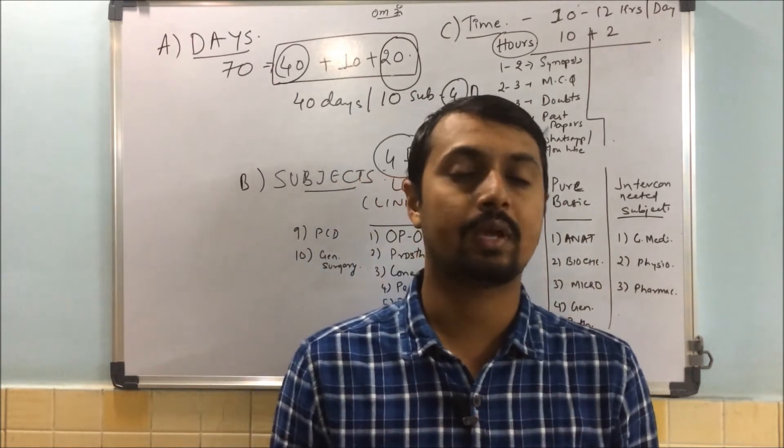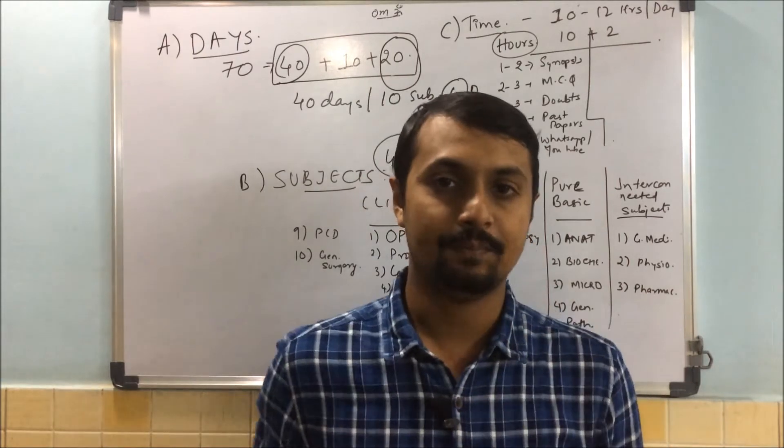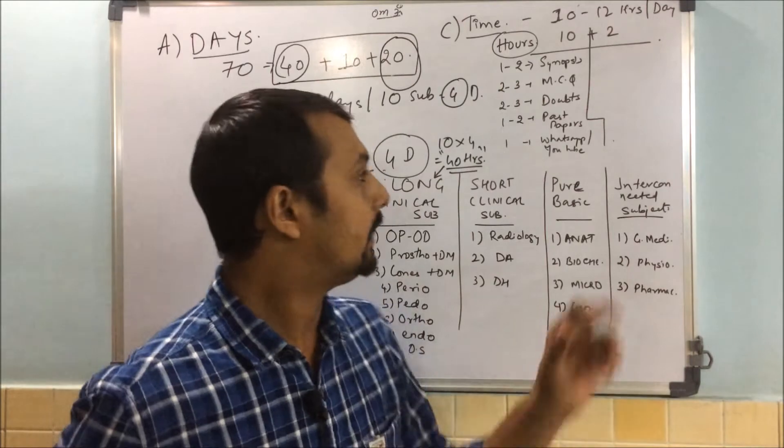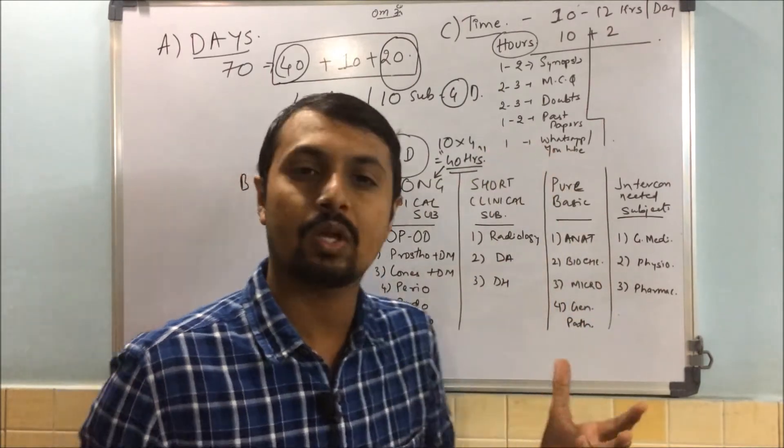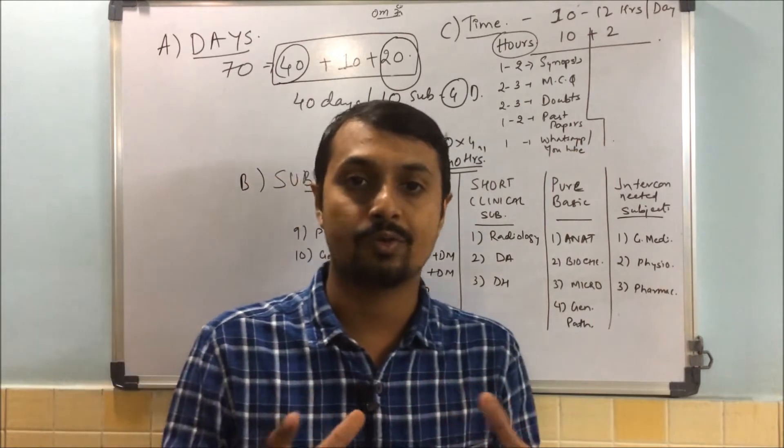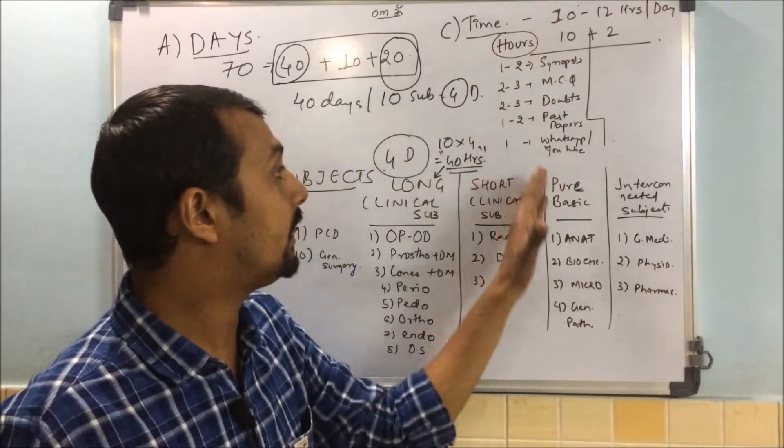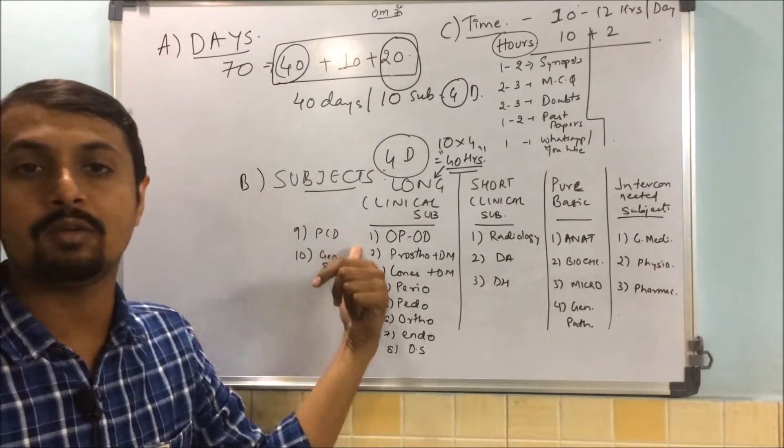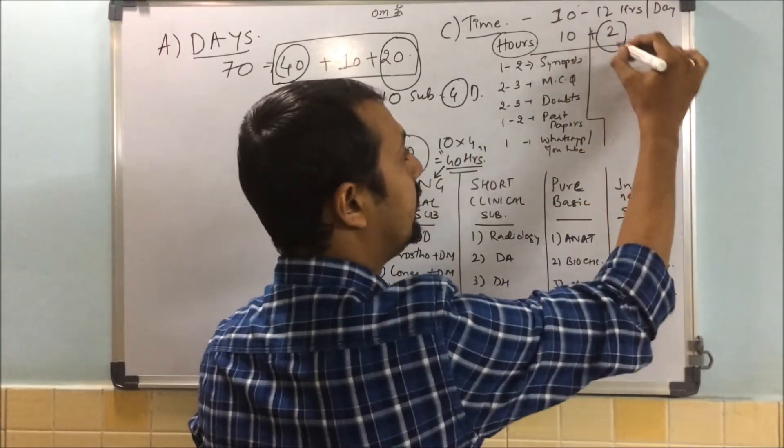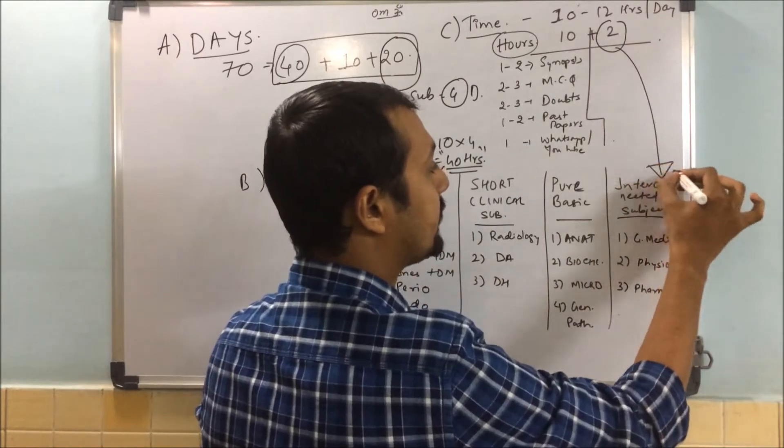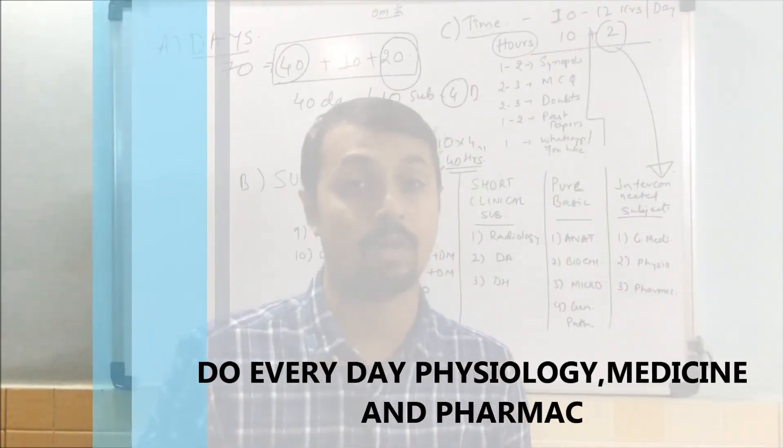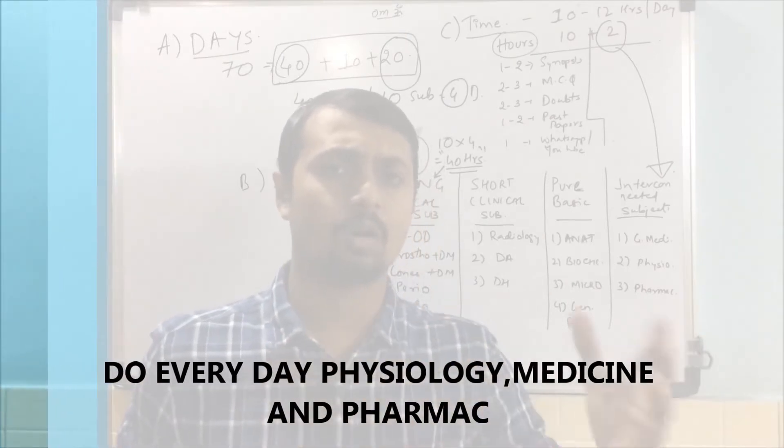Then comes past papers. Remember, my dear friends, every day you have to do at least one past paper - 10 years NEET and 10 years AIIMS papers. In this 40 days, you have to revise at least twice all the last 10 years past papers.